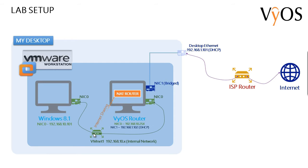Inside the operating system I have assigned a static IP address of 192.168.10.101. VMNET 1 is a virtual network inside VMware Workstation used for my internal network, and I will be using the 192.168.10.x subnet for this. I haven't built the VyOS router virtual machine yet, but it will have two virtual NICs, NIC 0 and NIC 1. NIC 0 will be connected to the internal network VMNET 1 with a static IP address of 192.168.10.254.